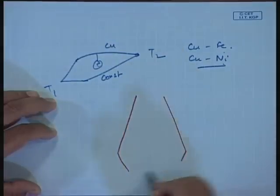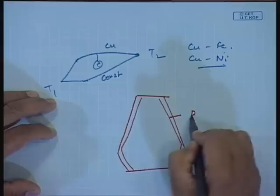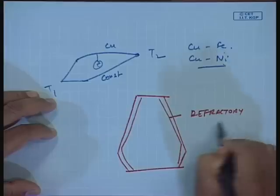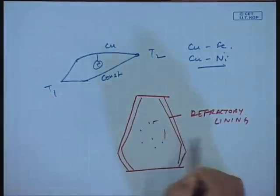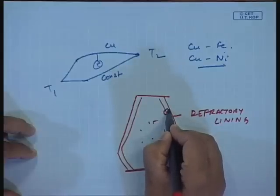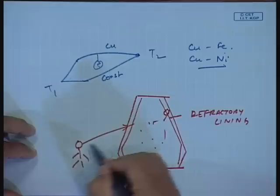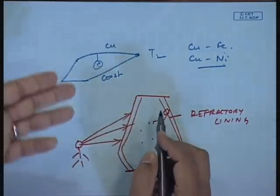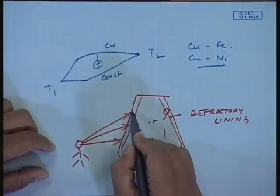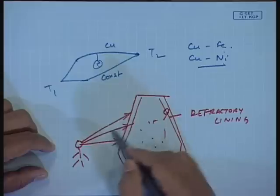In a blast furnace, there is a refractory lining and very high temperature operations inside. What happens when the blast furnace ages? Some of this refractory lining may weaken or break off. If somebody standing next to the blast furnace does a thermal scanning - either through a thermal imaging camera or an infrared temperature detector - they will see some hot spots where the temperature has suddenly increased because the refractory thermal insulation has deteriorated.